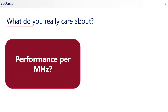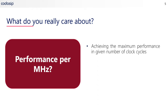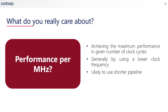In contrast to that, you may care more about performance per megahertz. In this case, you are wanting to achieve the maximum performance in a given number of clock cycles. A real example of this is low-power applications where you have a duty cycle — in other words, your processor goes to sleep and then wakes up and runs an application over a short period. You'll generally want to have a low number of cycles and a low clock frequency for that.